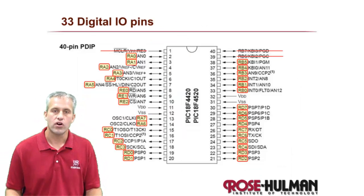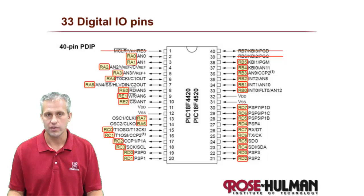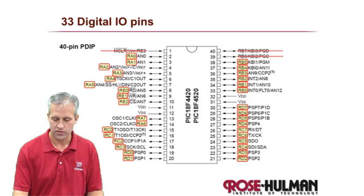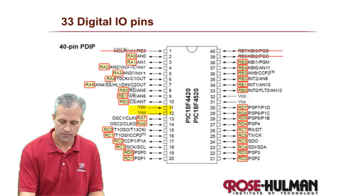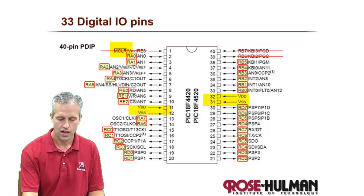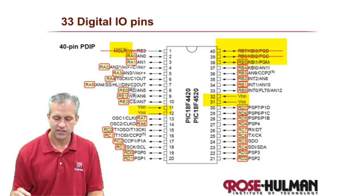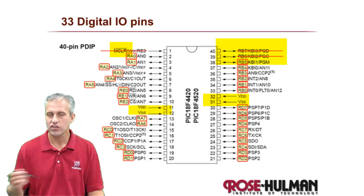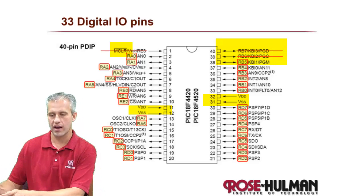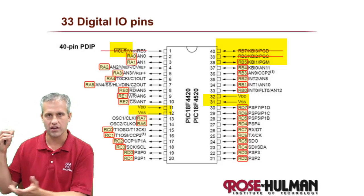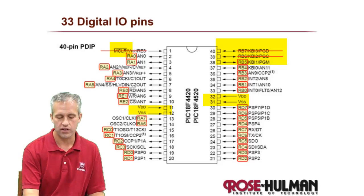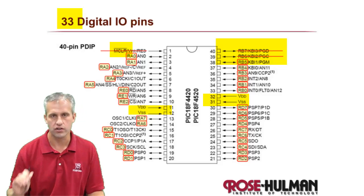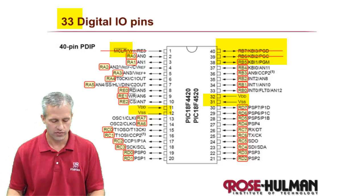There are 33 pins on our PIC that can be used for digital input or digital output. You can use all of them except for power and ground on each side, master clear, and technically the two programming pins — but you'd have to program it and then unplug it, so I recommend you don't. Essentially, we say there are 33 total to work with.